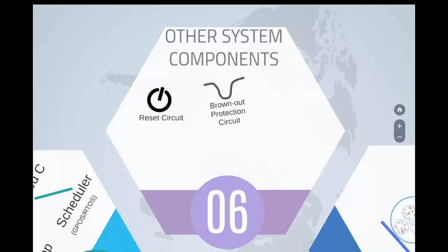The brownout protection circuit: when the supply to the core fluctuates, it is called a brownout. During such times the core may malfunction and produce unpredictable results. The brownout protection circuit protects the core from going into such states. A real-time clock, also called RTC, is a clock that keeps track of current time. Many embedded systems need to keep accurate time, and the RTC helps with that.